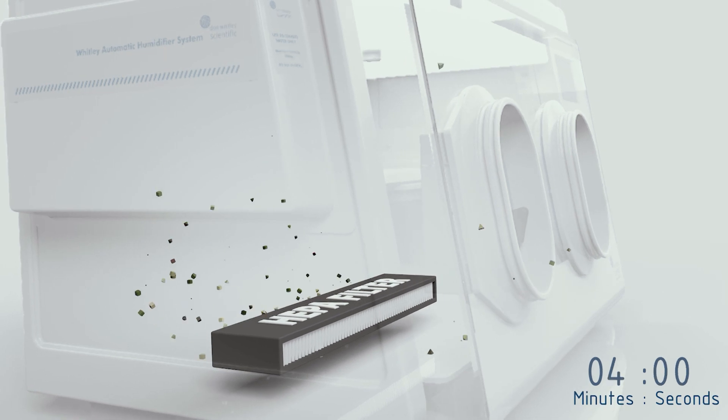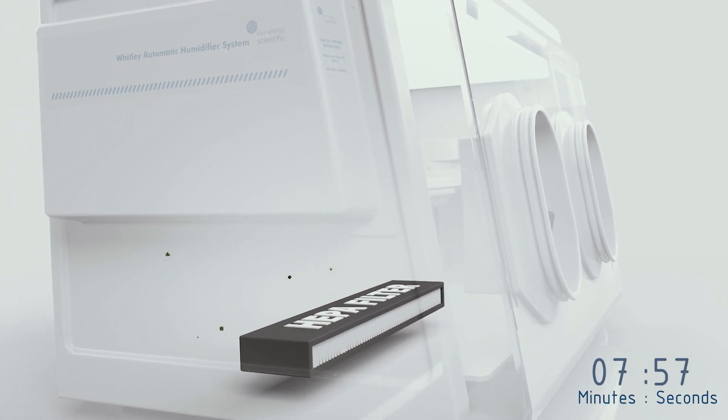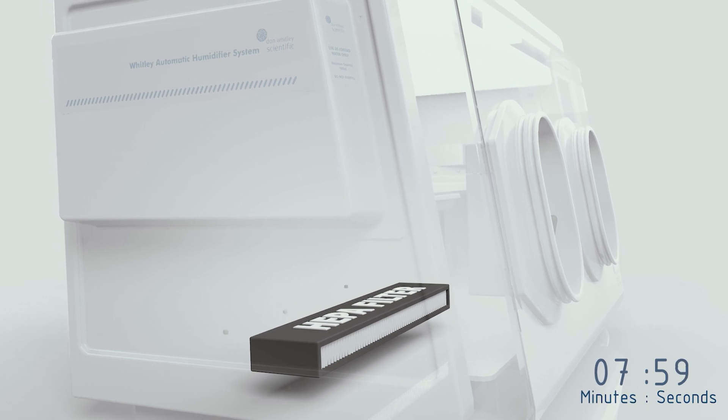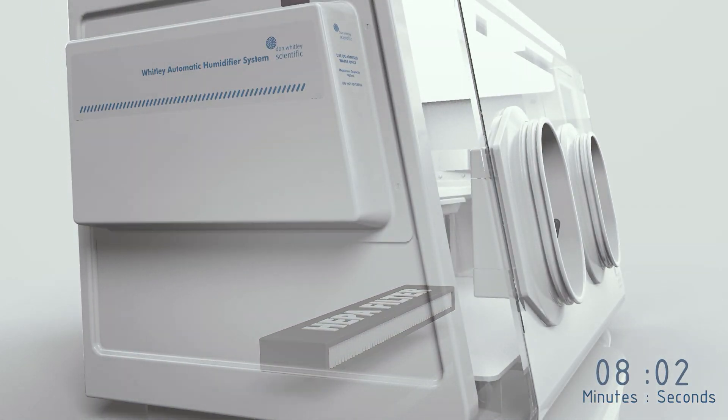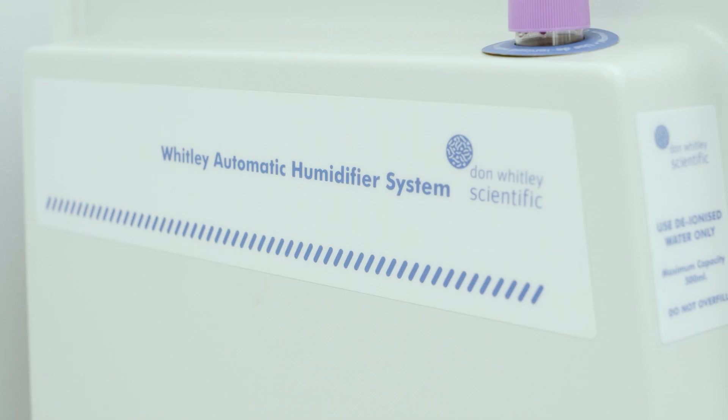The entire workstation atmosphere passes through the filter hundreds of times an hour which ensures the chamber environment is cleaned quickly. The filter location inside the workstation prevents it from becoming saturated with moisture.